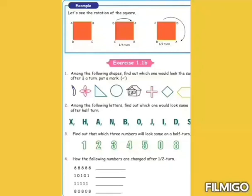Second, among the following letters, find out which one would look same after half turn. X, H, N, O, I, S. Again one time: X, H, N, O, I.